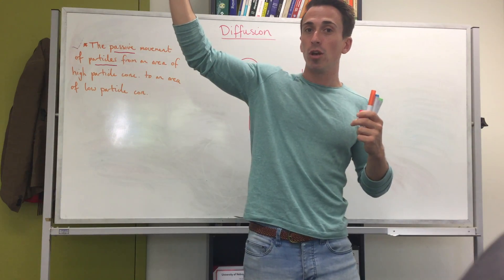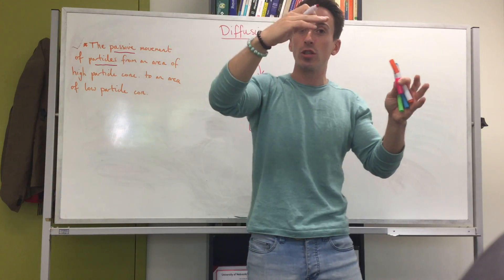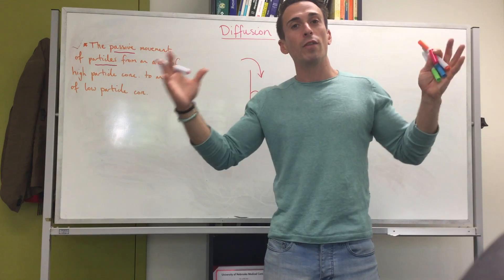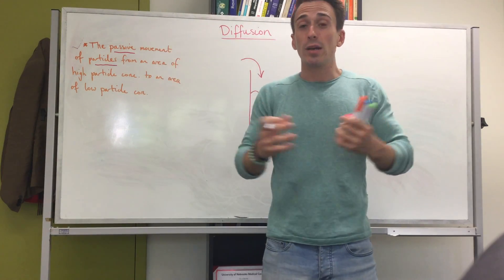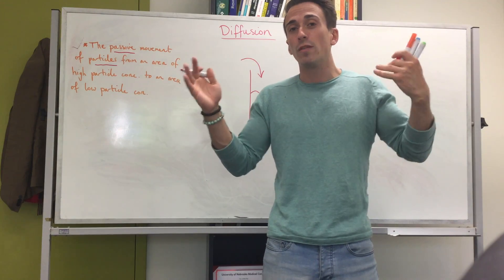So what you find is that a high concentration moves to an area of low concentration until there's some form of equilibrium. That's what you need to think about. The universe basically wants to maintain some form of equilibrium.